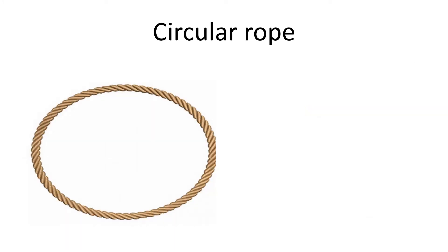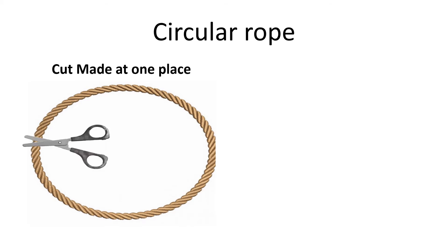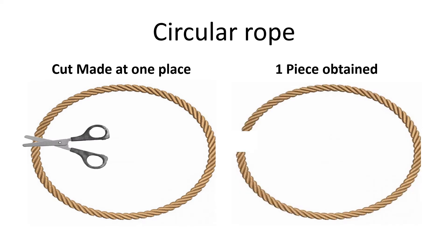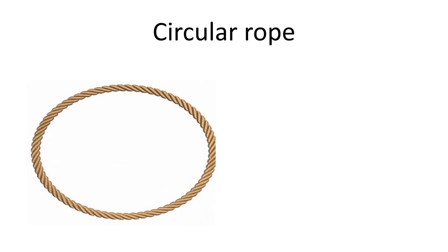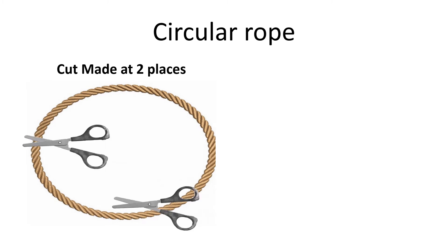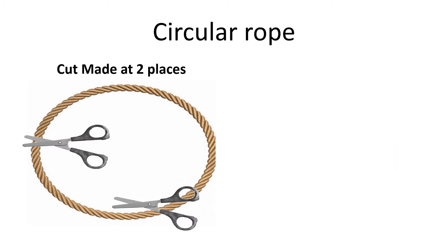Now if the rope is in a circular form and a cut is made at one position, we won't get two fragments — we will only get one fragment, because this cut is just going to open the circular rope and make it into linear form. On the same circular rope, if a cut is made at two different places, the first cut will linearize the rope and the second cut will make a fragment. So at the end we will get two pieces.